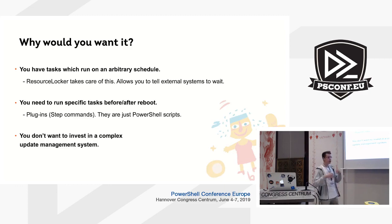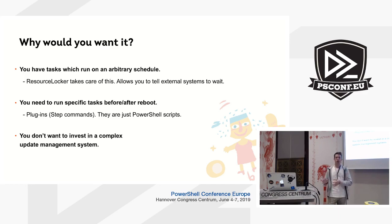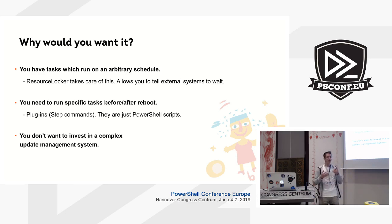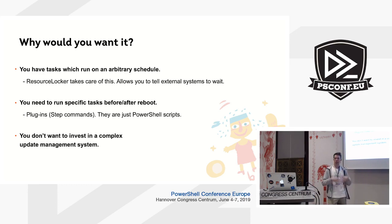Why would you want to use this system? First of all, if you have scripts running in your infrastructure and it's not easy for a human to schedule it, or not easy to build a predetermined scheduler when one machine can go down and the other should not — Resource Locker will take care of this for you automatically. It basically allows external systems to wait, and automatic maintenance is aware of these locks. Secondly, if you want to run some tasks every time you maintain a server, they are just PowerShell scripts so you can run anything. This system is written in pure PowerShell — it's very simple, so you do not need to invest in a complex system.